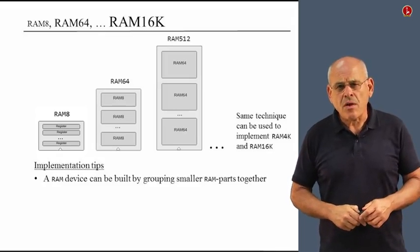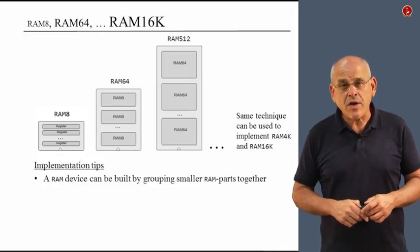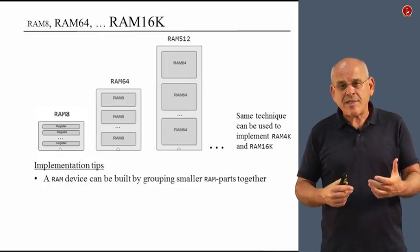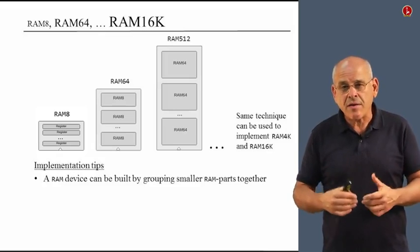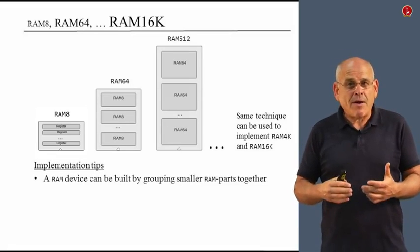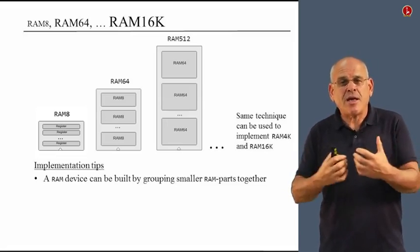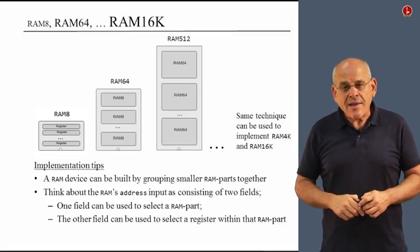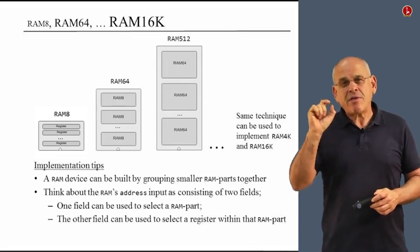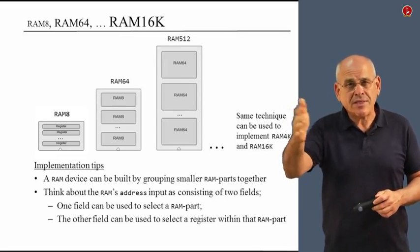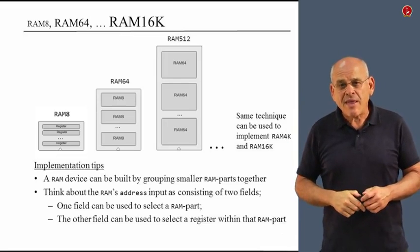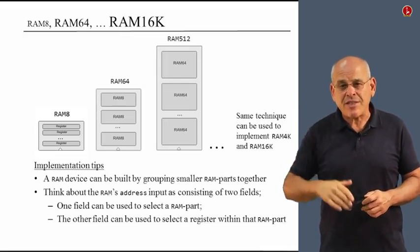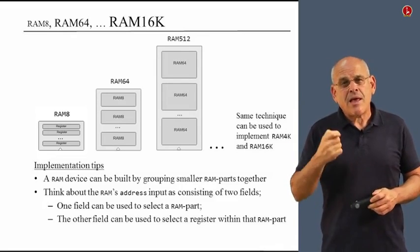Now, how do we do it? Well, first of all, we note that a RAM device can be built by grouping together smaller RAM parts, which is an HDL description of what I did before in this diagram. And we can think about the address input, which is not shown here, but it's in the background. We can think about the address input of every one of these chips as a binary value that consists of two logical fields.